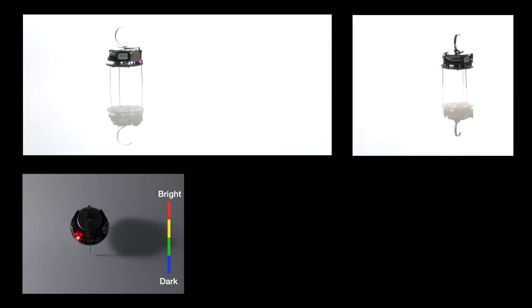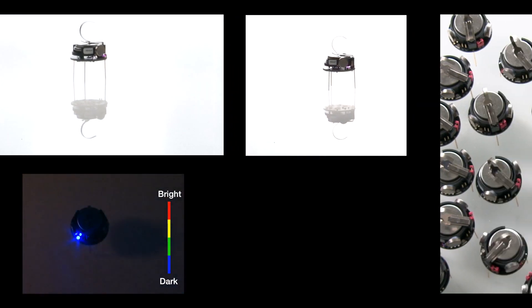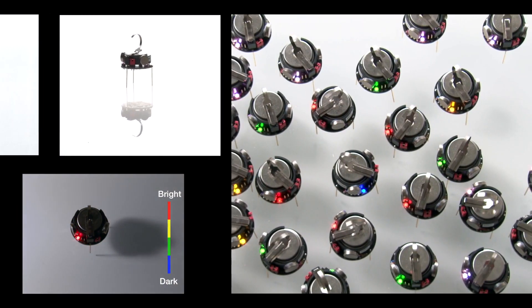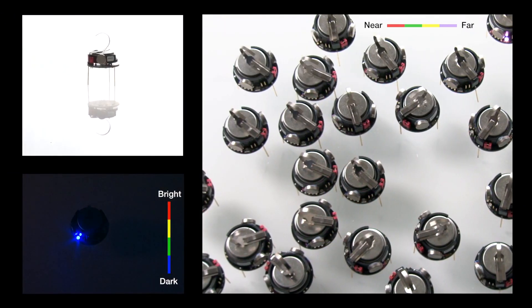The Kilobot has only one sensor with which it can measure the brightness of the ambient light. It can also exchange three-byte messages with neighboring robots and, when receiving a message, estimate the distance of the sender.